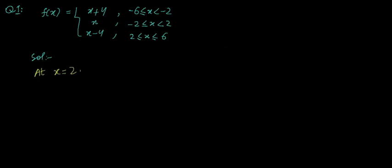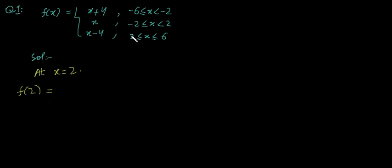Similarly, let us discuss the continuity of the function at x equals 2. In a similar manner, we find the value of the function at x equals 2. Since in the third piece the function is defined by x minus 4 for values where 2 is less than or equal to x, the value 2 is included in this interval. When we put x equals 2 into the third formula, we get 2 minus 4, which equals minus 2.